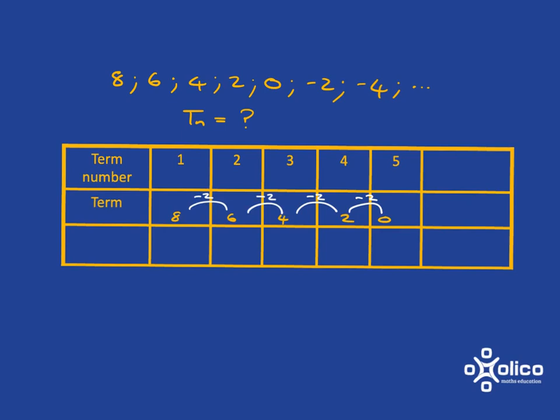Okay, your first step should have been to notice that you were subtracting 2 each time. You then should know that your Tn will be minus 2n, but it could be plus something or minus something, and we've got to figure out what that is.